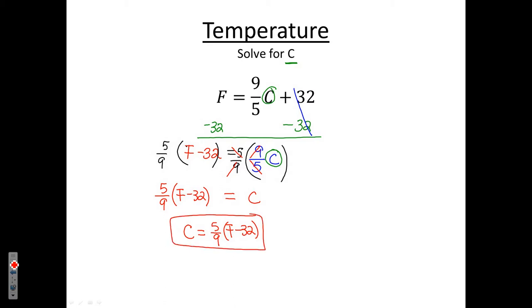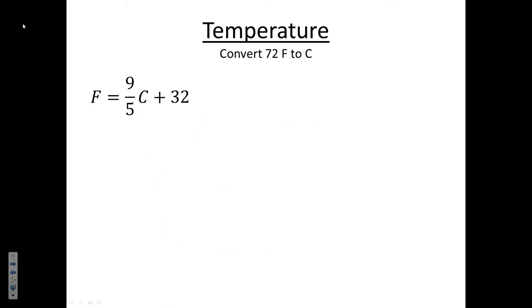Again, a formula that you have probably seen before. The original formula was solved for F, this one has now been solved for C or Celsius. So just working with temperature. Another problem with temperature. In this particular one, we're still working with the same formula we were just a minute ago, but we're wanting to convert 72 degrees Fahrenheit to Celsius.